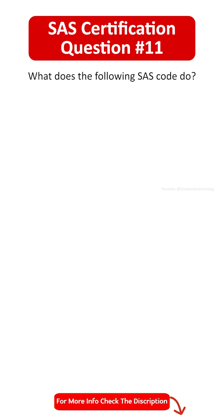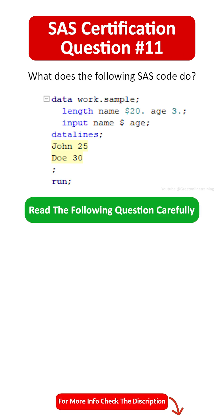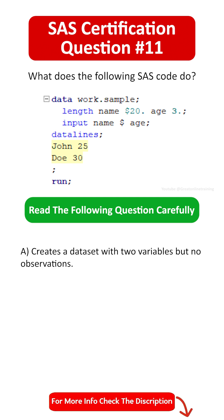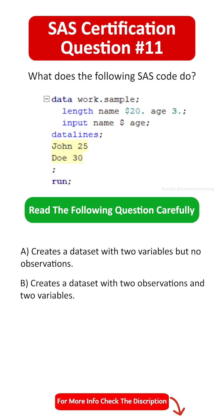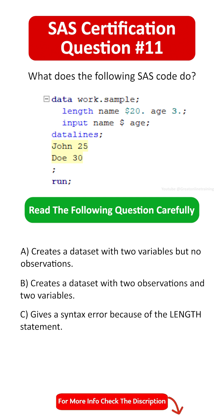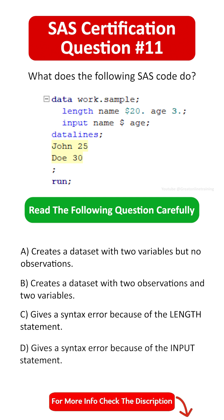What does the following SAS code do? A. Creates a dataset with two variables but no observations. B. Creates a dataset with two observations and two variables. C. Gives a syntax error because of the length statement. D. Gives a syntax error because of the input statement.